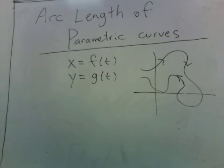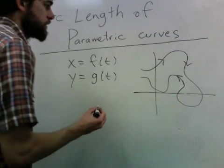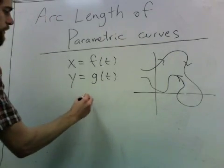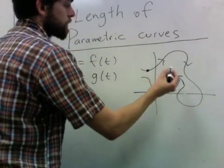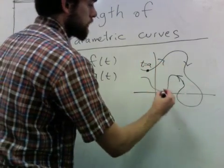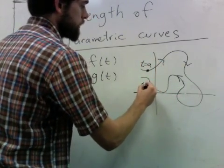The way we're going to compute the length of this is to pick a bunch of values of t. So say we start here at t equals a and here at t equals b.